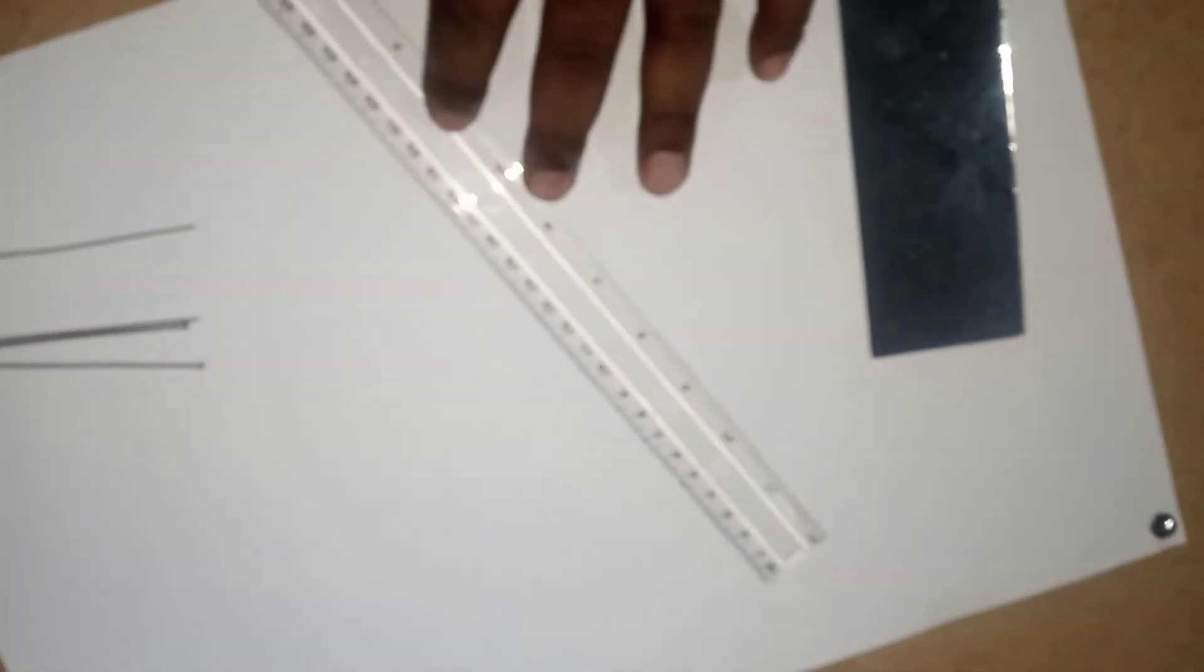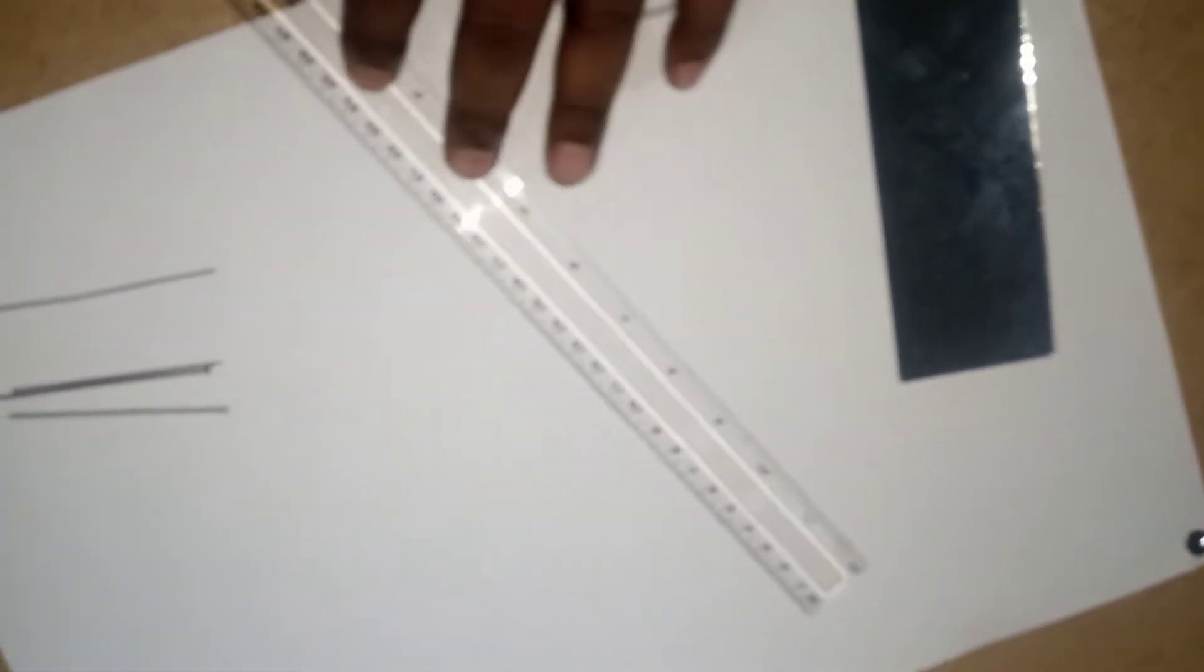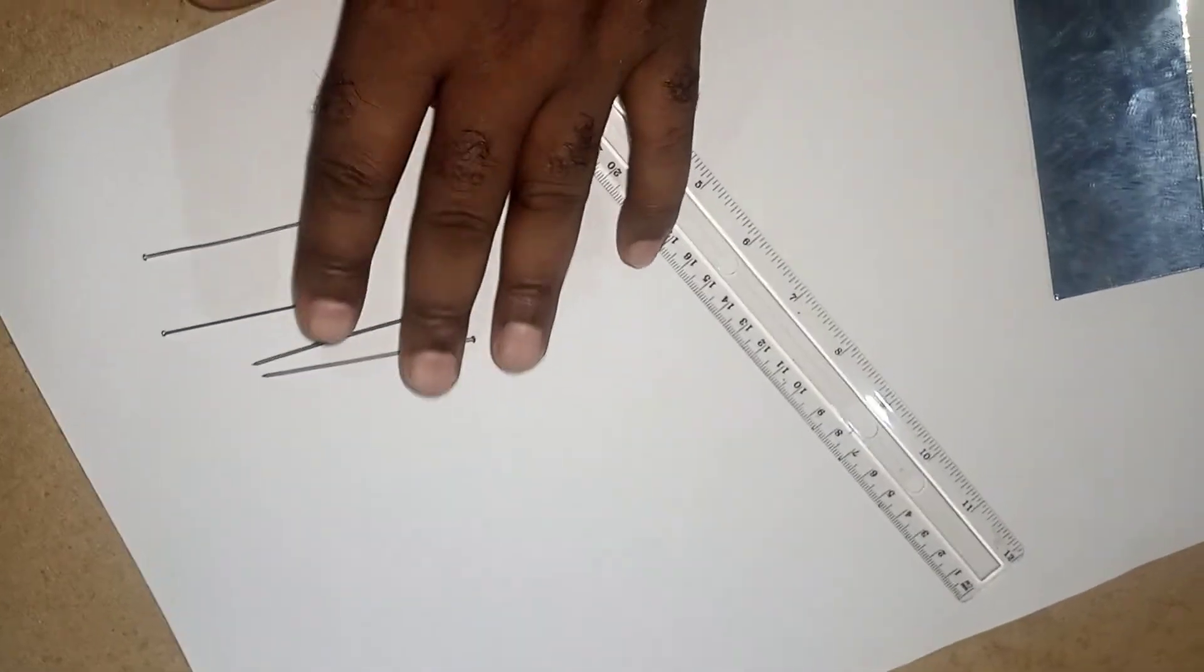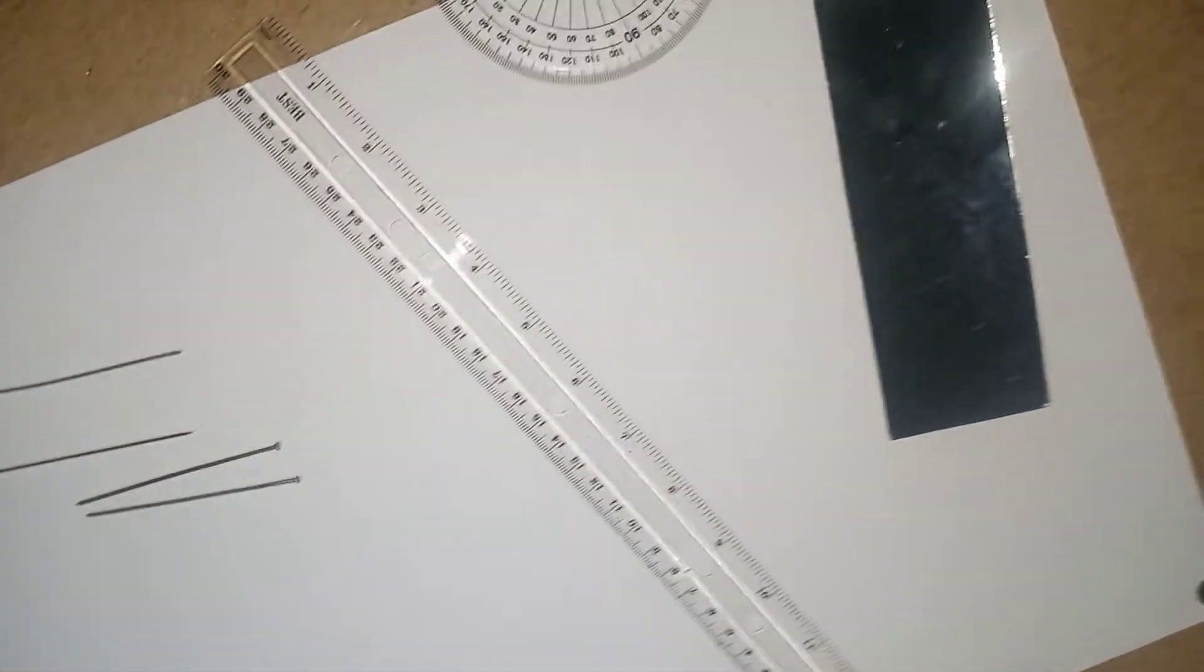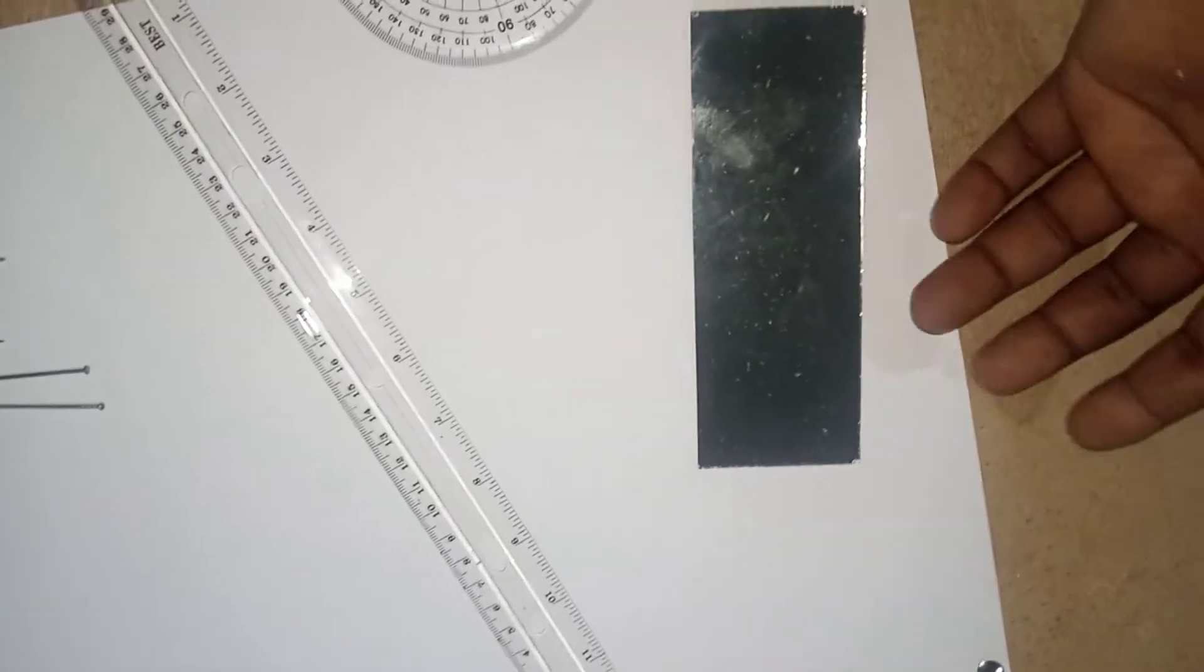A meter ruler is also necessary. You need four optical pins, a plain sheet of paper, and then a drawing board and of course your pencil.